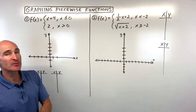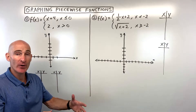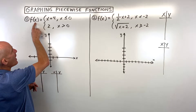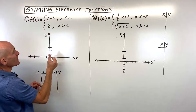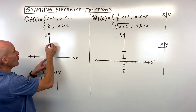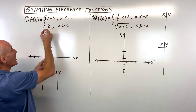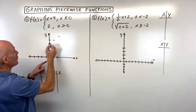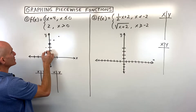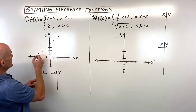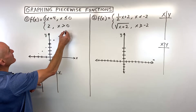Let me show you the first method, which I call the graph and erase method. Since f of x is like y, we're graphing the line y equals x plus 4. This is just a line with a y-intercept of 4, so it's going to cross right here at 4. It has a slope of 1, so we go rise 1, run 1, and you can see we have this line here.